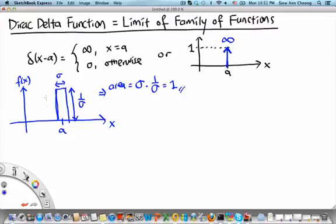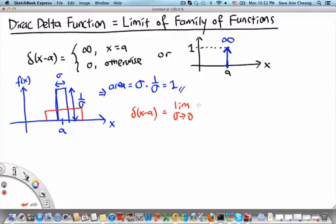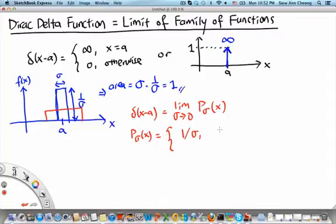You can have a skinny rectangular function or a fat rectangular function, where the width is a larger value of σ and therefore the height reduces correspondingly. Formally, p_σ(x) is defined as 1/σ if x is between a − σ/2 and a + σ/2, and 0 otherwise.